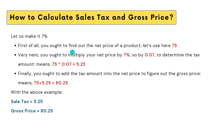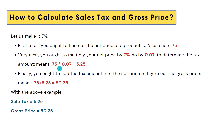We will find the net price of a product. For example, let's imagine the price of the product is 75. The very next step is to multiply the net price by seven percent — that means 0.07. So 75 into 0.07 equals 5.25. This is the sales tax we are getting. We multiply the tax with the price to get the sales tax, and finally we add the sales tax to the net price: 75 plus 5.25 equals 80.25, which is the gross price.